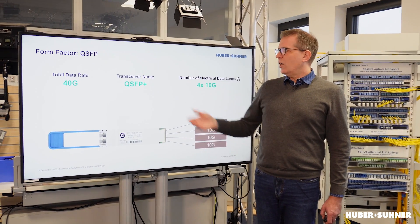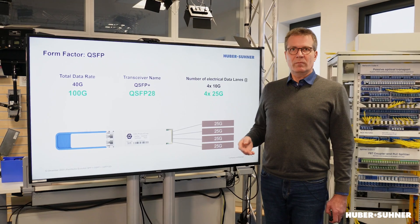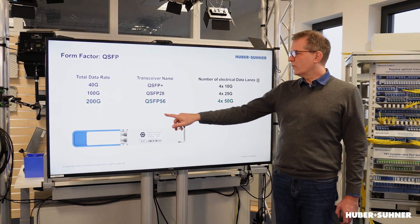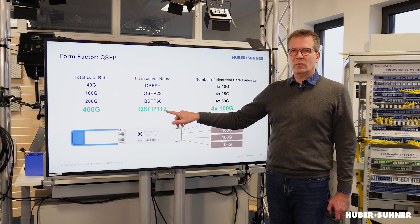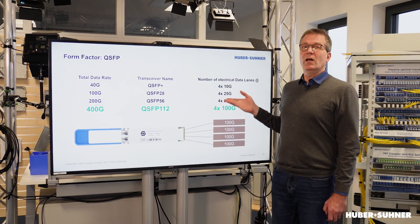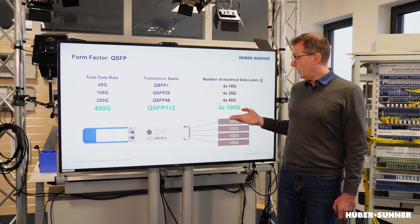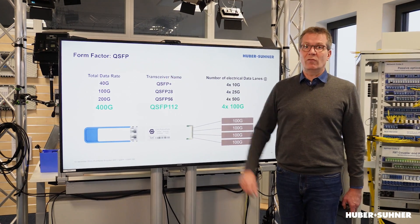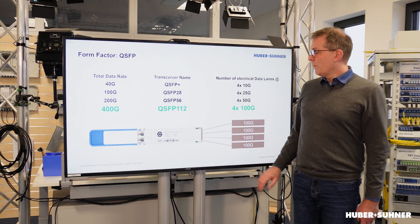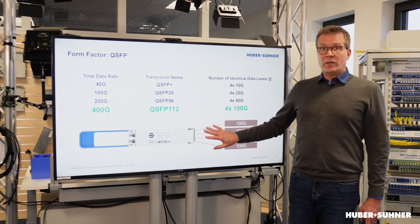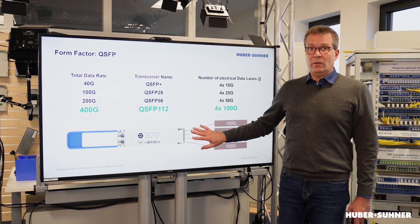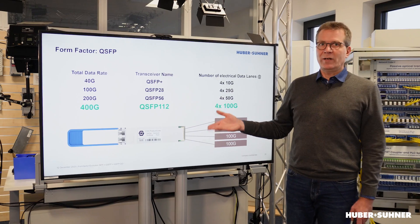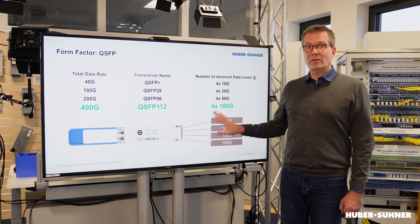Using the same logic, this can now be increased further, up to 112. QSFP112 delivers 100 Gbps over every single one of those four lanes, resulting in a total of 400 Gbps. And this is about the electrical infrastructure only — not what happens on the optical side. This whole discussion about form factors is about the electrical side.